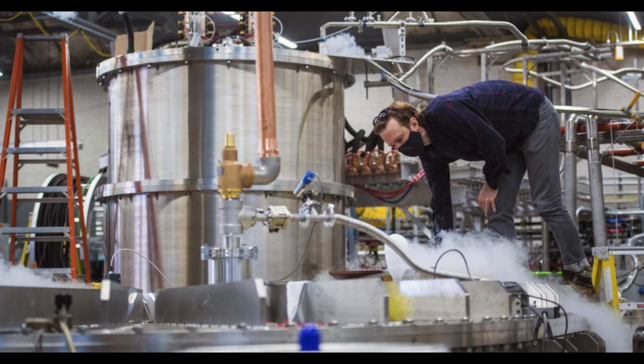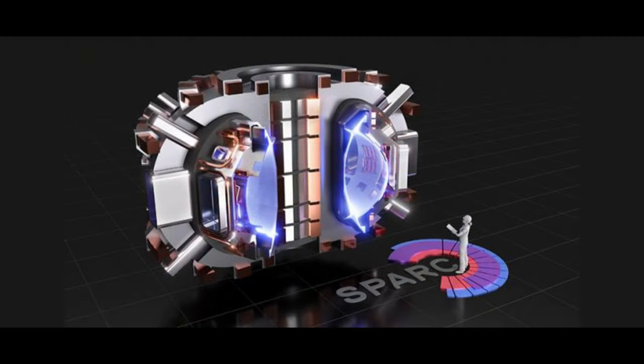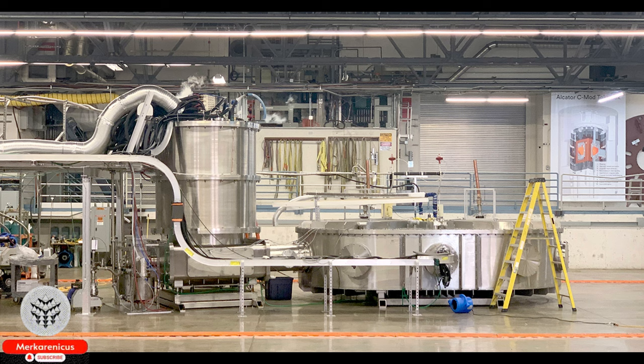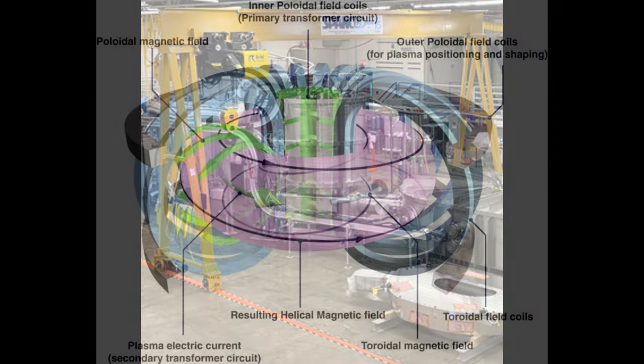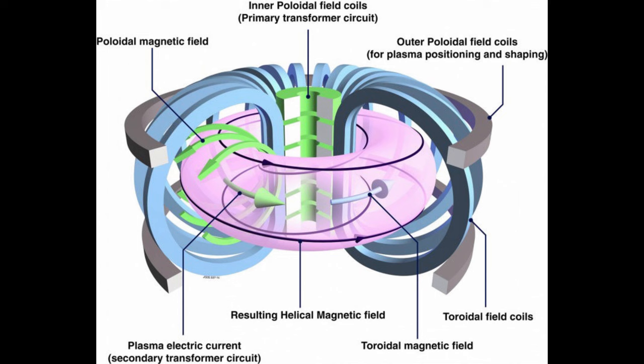In the subsequent months, the team meticulously dismantled and examined each individual part of the magnet, scrutinized the extensive data collected by numerous instruments during the tests, and conducted two additional trial runs on the magnet. Their ultimate objective was to push it to its limits, uncovering every potential mode of failure along the way.